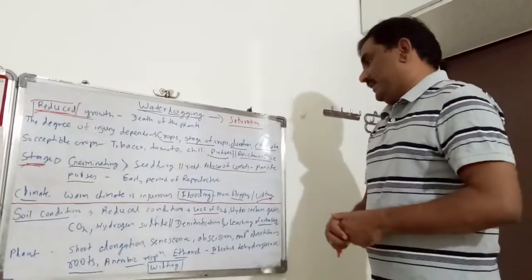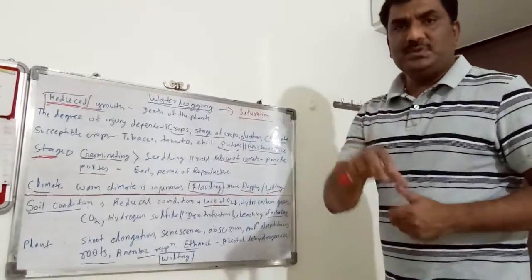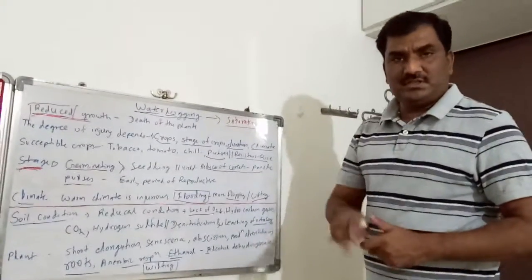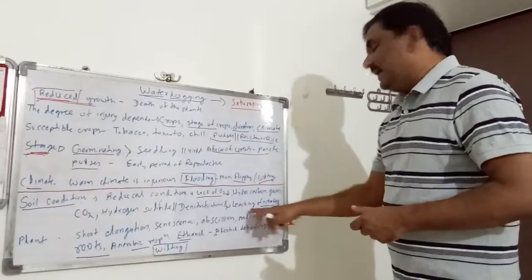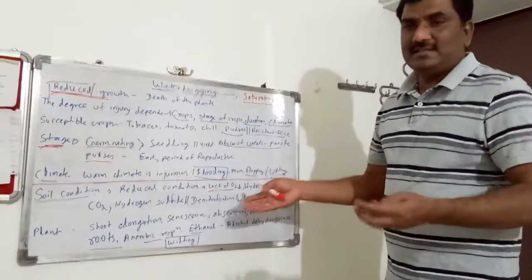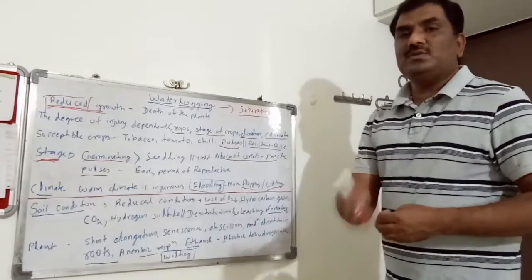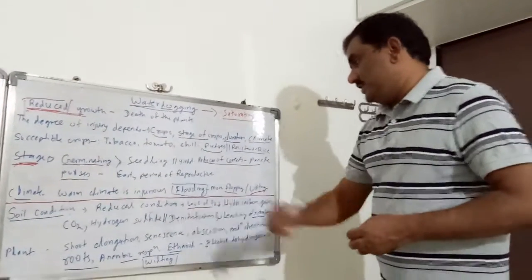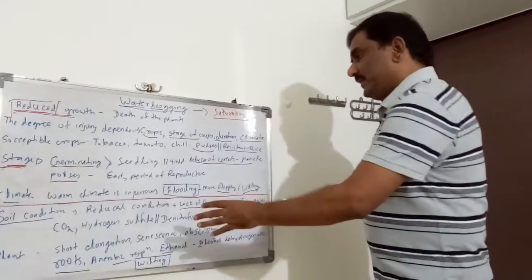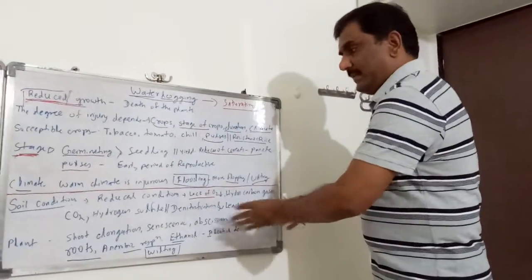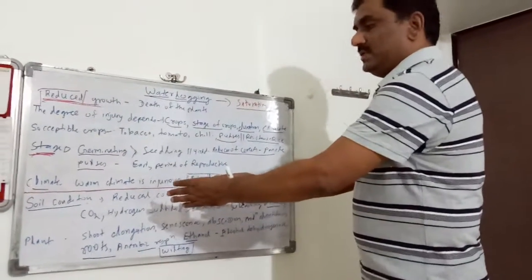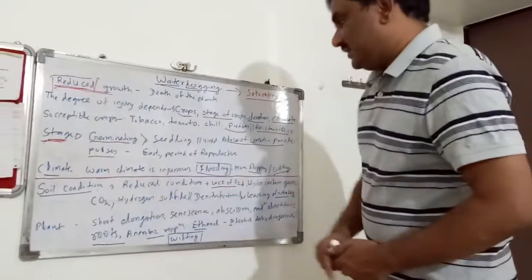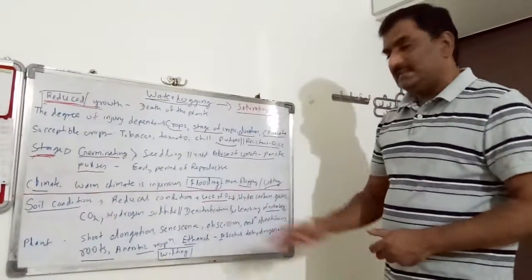In case of nutrients, more impact is on nitrogen, particularly through two processes: denitrification and leaching of nitrates. Since nitrates are mobile, they leach out with moving water. There is also denitrification, so there is loss of nitrogen. Along with the increase of certain toxic gases and reduction in oxygen, these soil changes significantly harm crop growth.